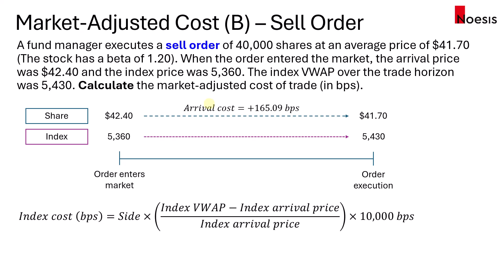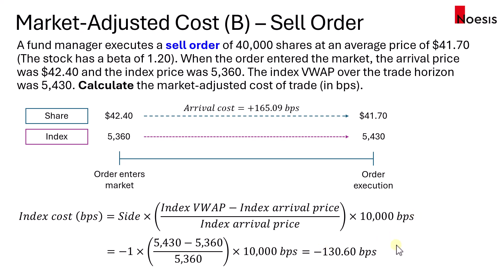Over the same period for the index cost, we substitute negative 1 for the side as well, since this is a sell order, and take the change in the index value multiplied by 10,000 basis points. We get negative 130.6 basis points. That means over that period, because the market was up, the shares should generally have been sold at a higher price since the market was trending upwards. But in this case, the share was sold at a lower price.